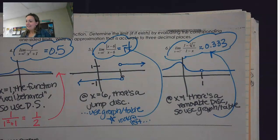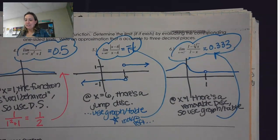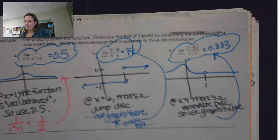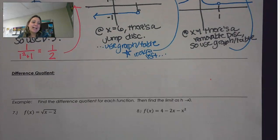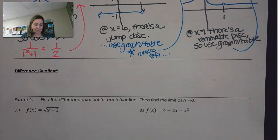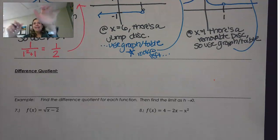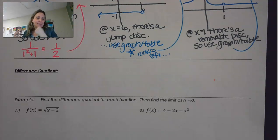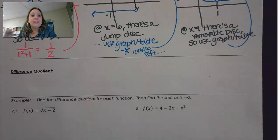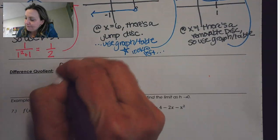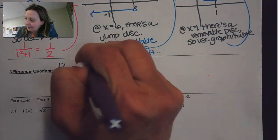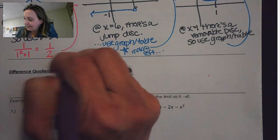So that's a little bit about one-sided limits and using the graphing calculator and different tactics to find those. The last thing we're going to do today is look at the idea of the difference quotient. The difference quotient is something we've talked about before, and it is the staple of being able to take derivatives in calculus.